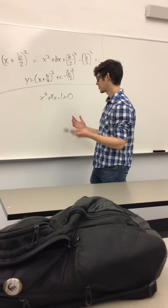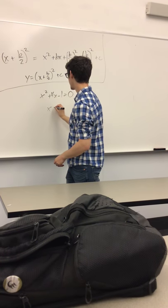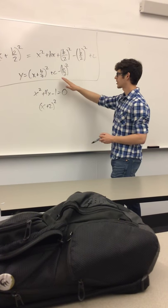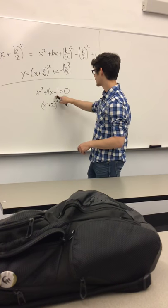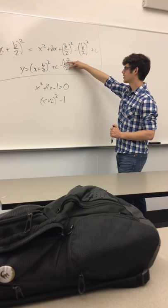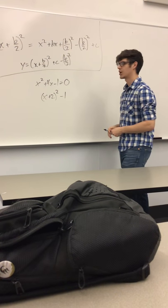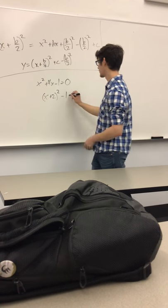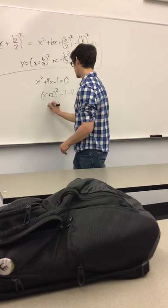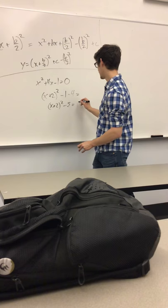We can take this b term, divide it by 2, and plug it right in. So we have x plus 2 squared. We need to look at our c term, and we see that our c term is a negative 1 here, so we put negative 1 down. And now, we look at this b over 2 and we square it. So b over 2 is 2, we square that term and get 4, and we need to subtract that. Our end product will be x plus 2 squared minus 5 equals 0.